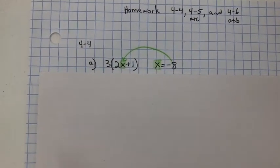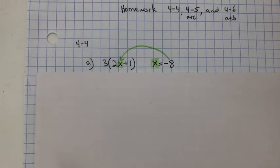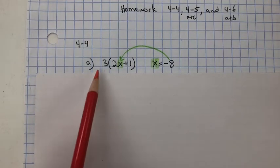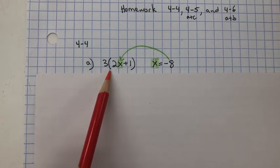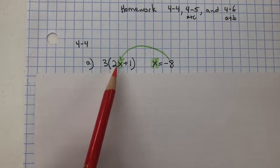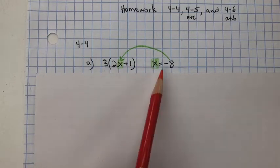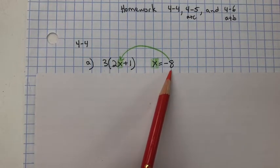In problem 4.4, you needed to evaluate the expressions for the given values. For A, we have 3 multiplied by the quantity of 2x plus 1, when x equals negative 8.